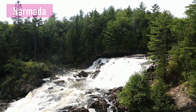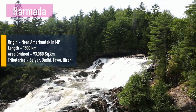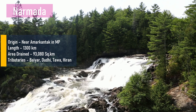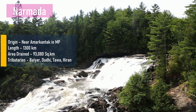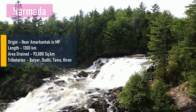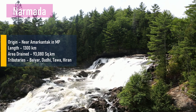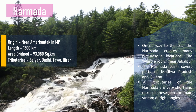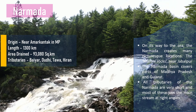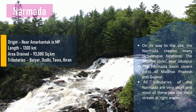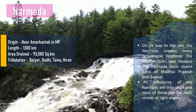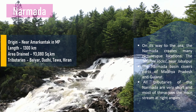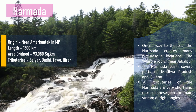The Narmada river: it originates near Amarkantak hills in Madhya Pradesh; its total length is 1,300 km; area drained is 93,080 sq km. Its tributaries are Burhner, Dudhi, Tawa, and Hiran. The Narmada basin covers parts of Madhya Pradesh and Gujarat, and all tributaries of Narmada are very short, most joining the main stream at right angles.